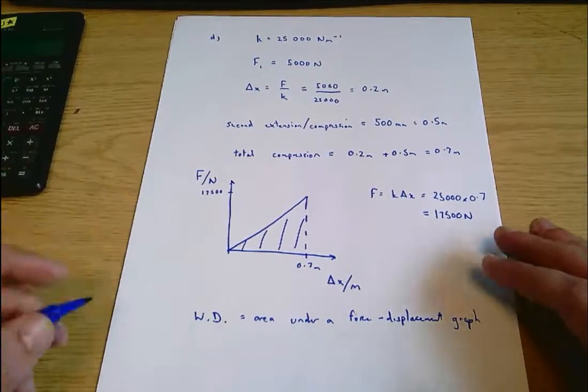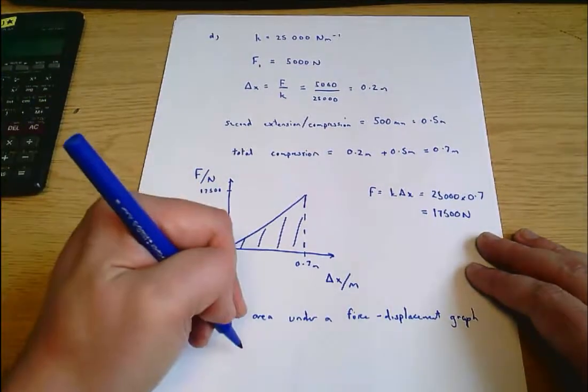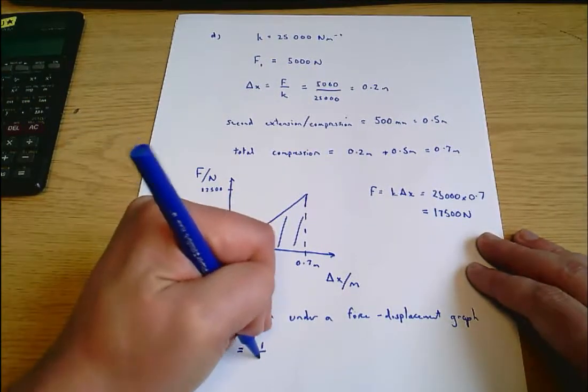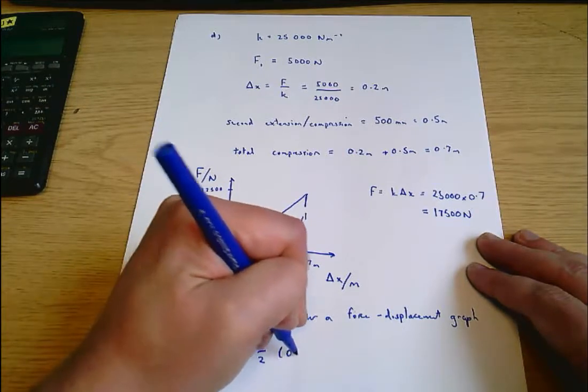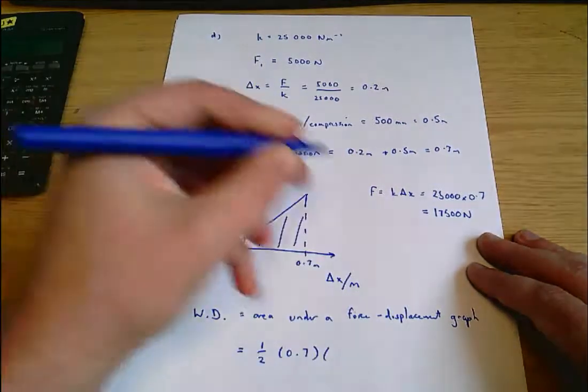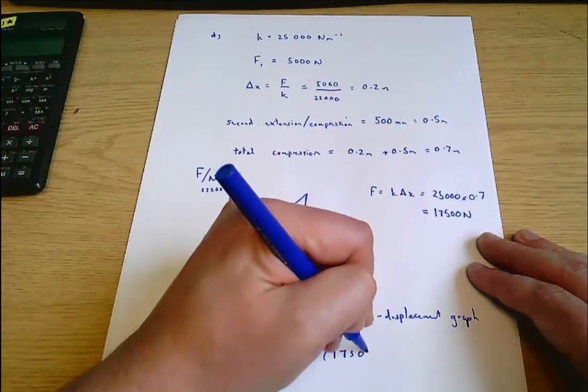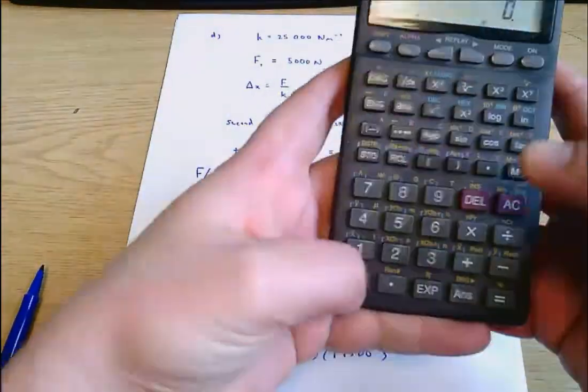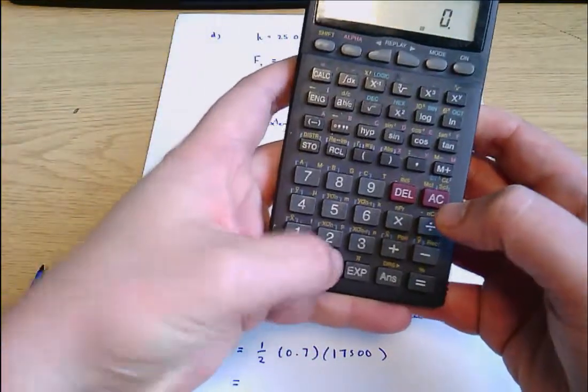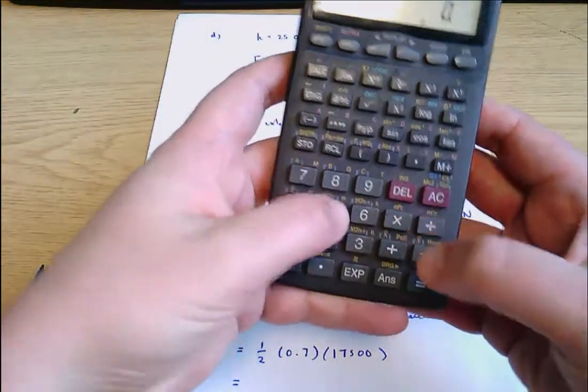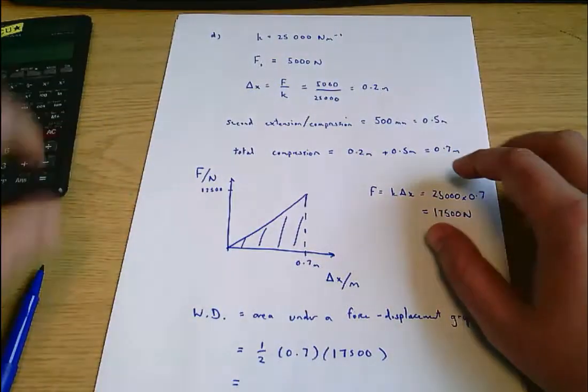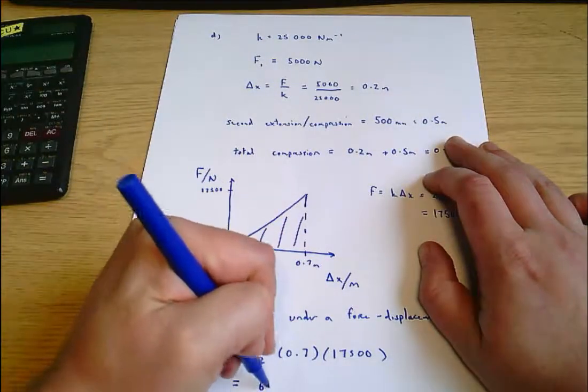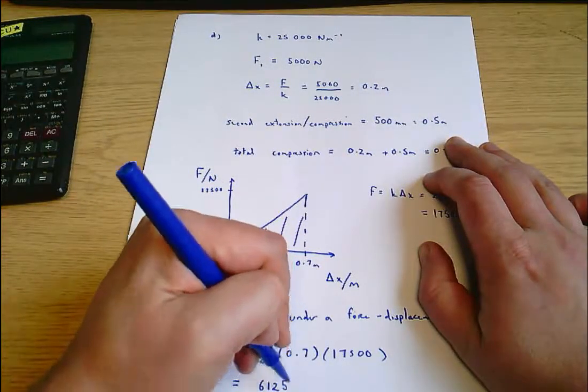Work done is the area under force displacement graph, which here equals a half times the base times the height. Equals 6125 joules.